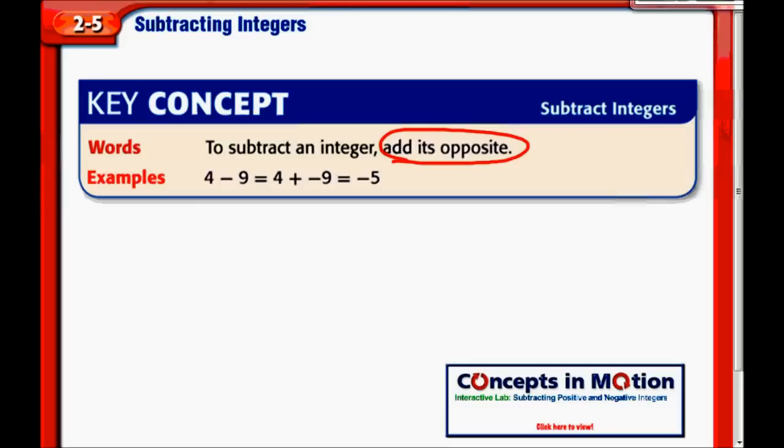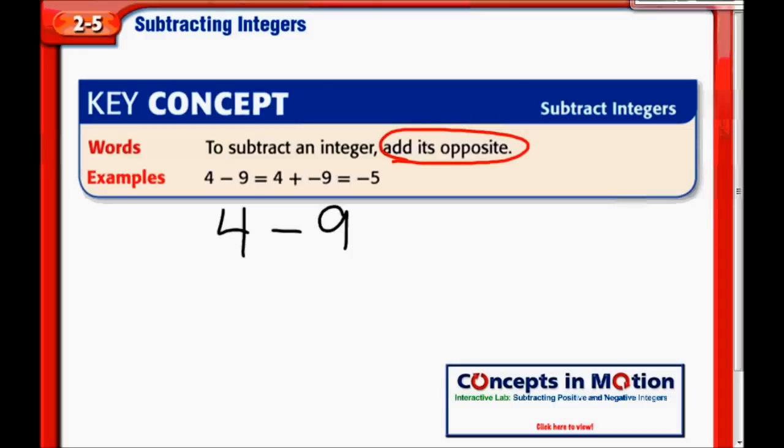So what that means is, let me rewrite this problem into something that makes sense. So while we're starting with 4 minus 9, we're actually going to add the opposite of the second number. The way I like to remember that is the letters KCC, almost looks like Kentucky Fried Chicken, KFC, but it's KCC. And KCC stands for keep, change, change.